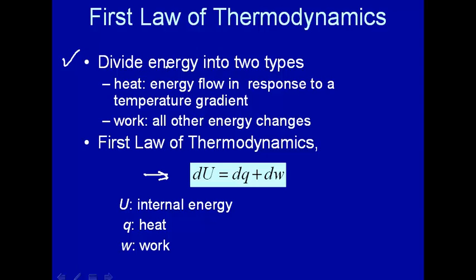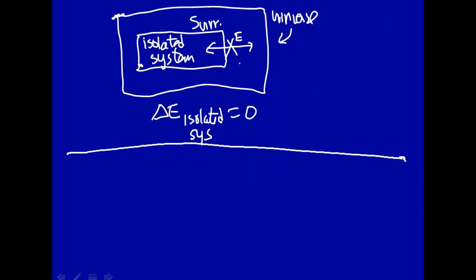Engineers back in the middle and late 1800s decided to divide energy into two different types. One was heat, and that's defined as energy flow in response to a temperature gradient, and then work, that was all the other kinds of energy.